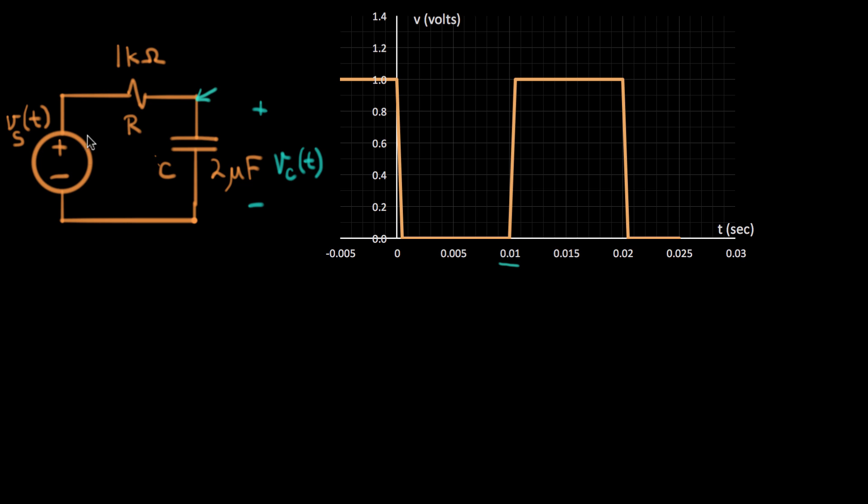Here's an example circuit I've already set up. It's an RC circuit. This is 1,000 ohms and this is a two microfarad capacitor. And this voltage source provides a step voltage to us.